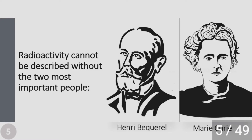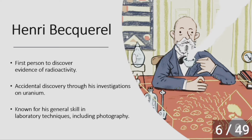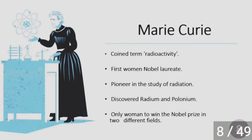Radioactivity cannot be described without the two most important people: Henry Becquerel and Marie Curie. Henry Becquerel was the first person to discover evidence of radioactivity through an accidental experiment — he found that uranium was radioactive accidentally. He is also known for his general skill in laboratory techniques, including photography. Marie Curie was the first woman Nobel laureate and won two Nobel prizes in physics and chemistry. She pioneered the study of radiation, coined the term radioactivity, and discovered radium and polonium — an inspiring personality who broke stereotypes.